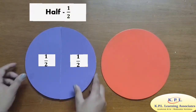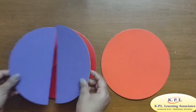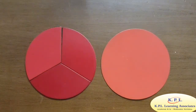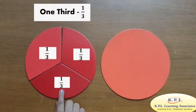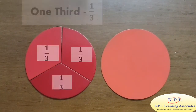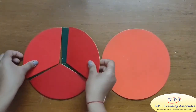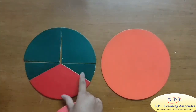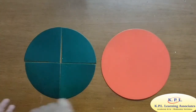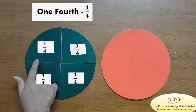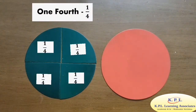Further, when we divide it into three equal parts, each part is called one third, i.e. 1 by 3. Now divide the circle into four equal parts. Each part is called one fourth, i.e. 1 by 4.